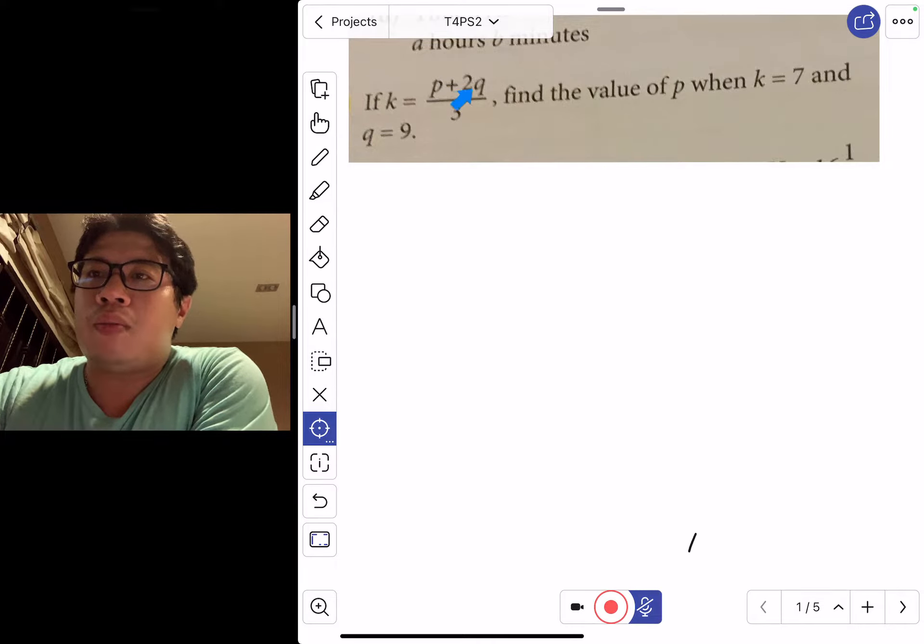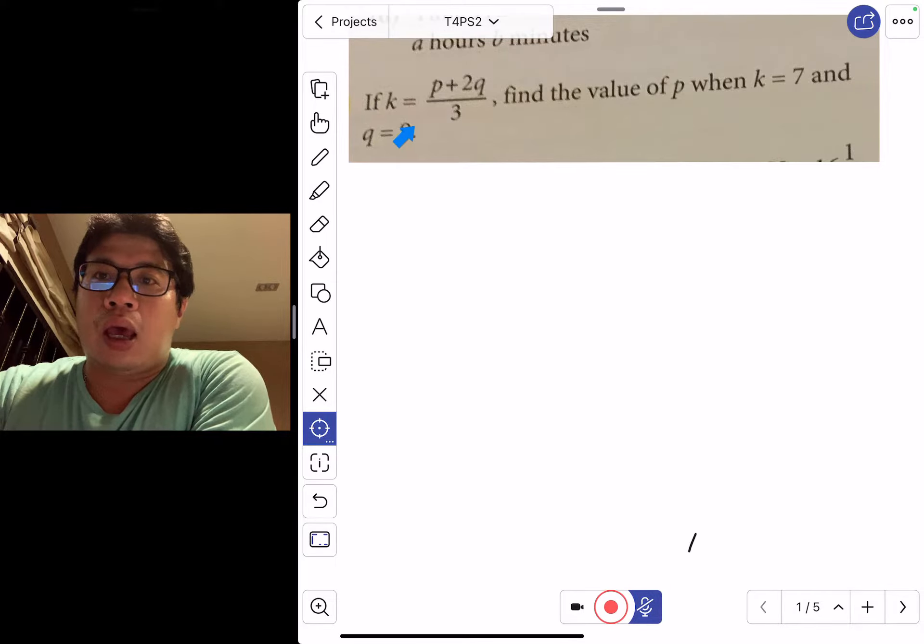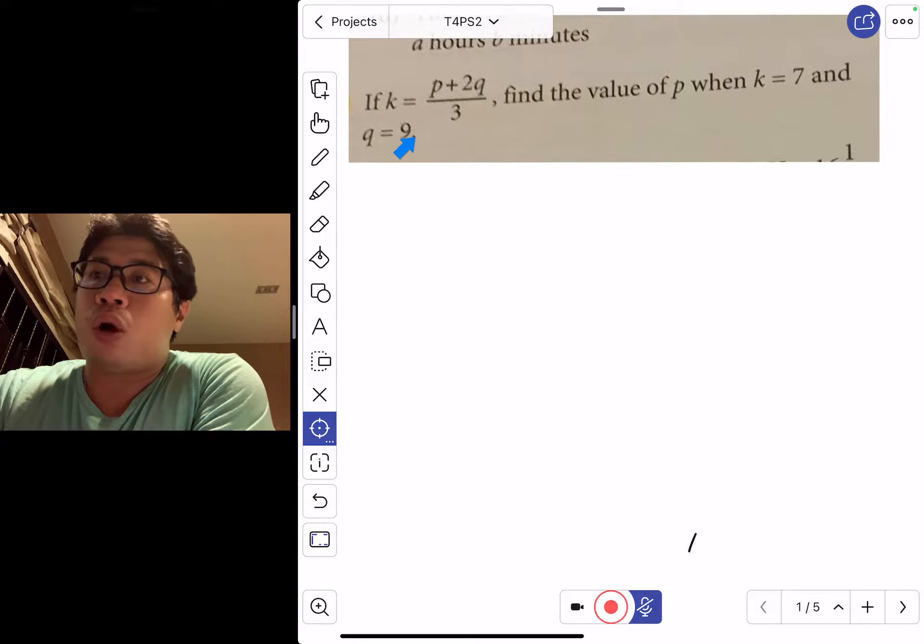If k equals p plus 2q over 3, we want to find the value of p when k equals 7 and q equals 9. So what we do is basically substitute the values of k and q into the equation.